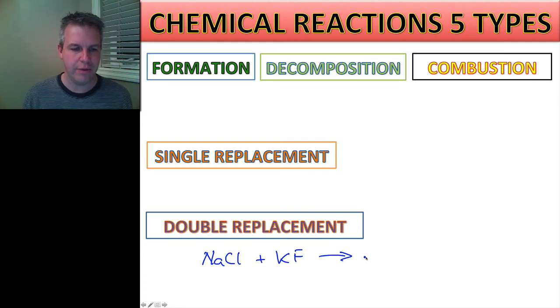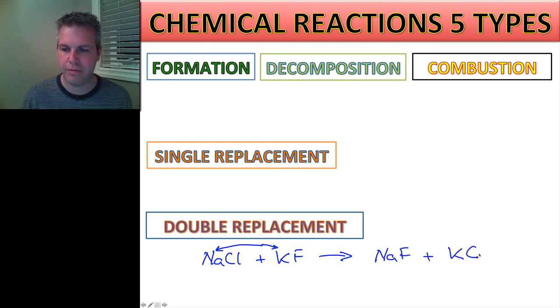So all I'm going to do is switch the potassium with the sodium. So that's going to give me sodium fluoride and potassium chloride. Really simple to do. I just have to make sure that I actually slow down and do these so I don't make a mistake. This is not very difficult.